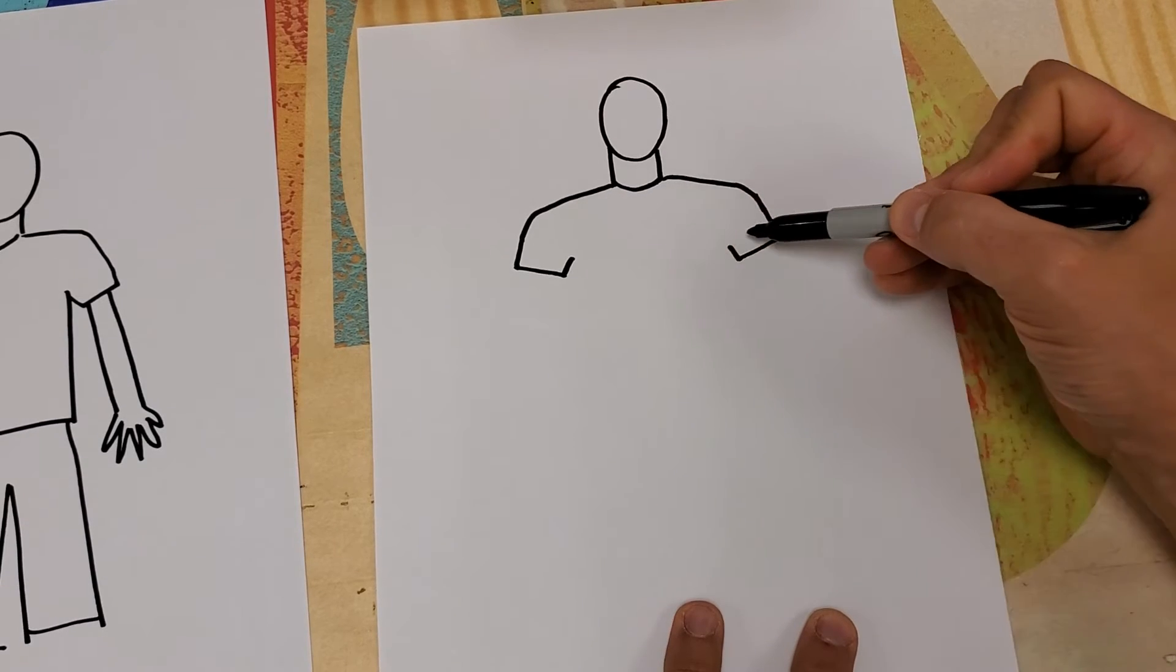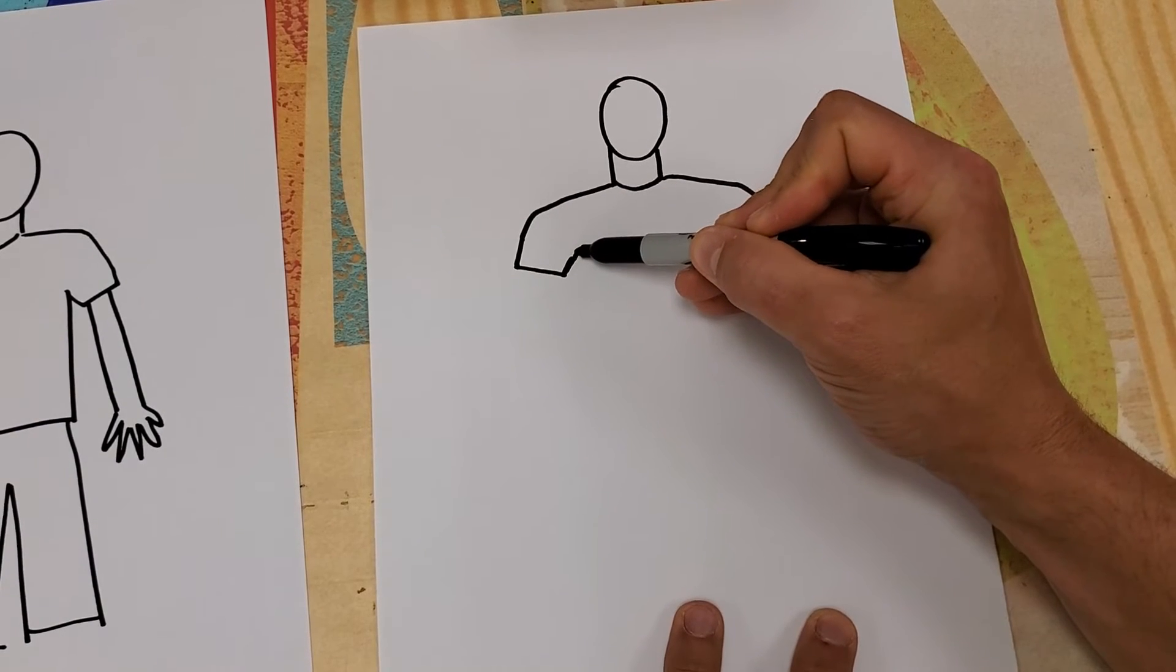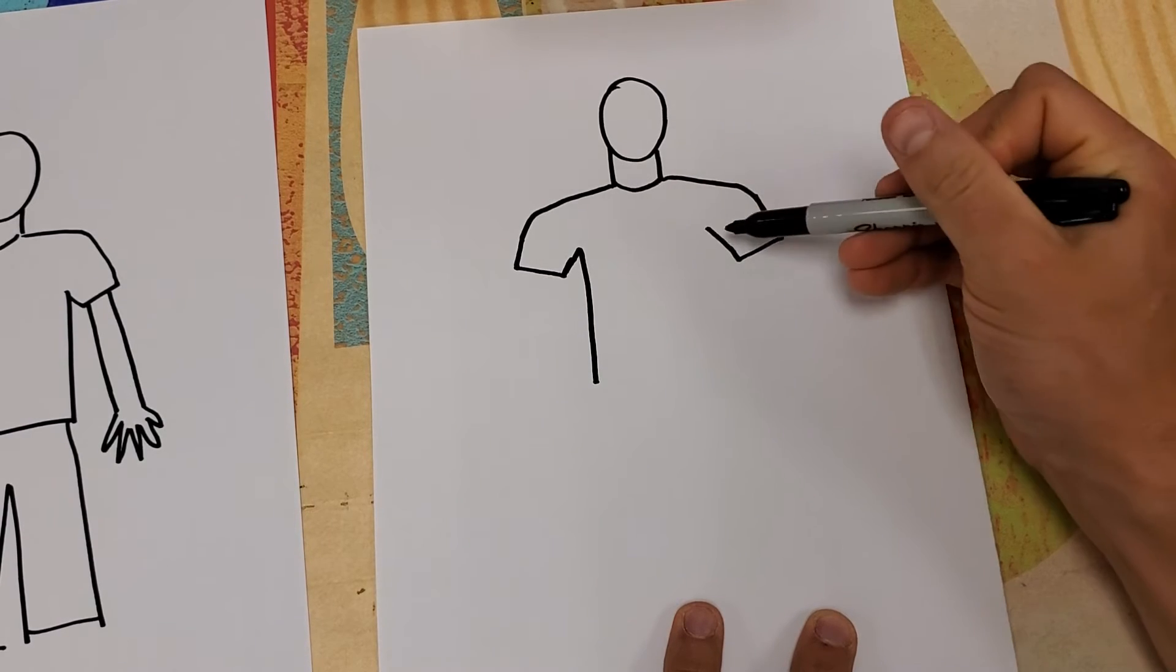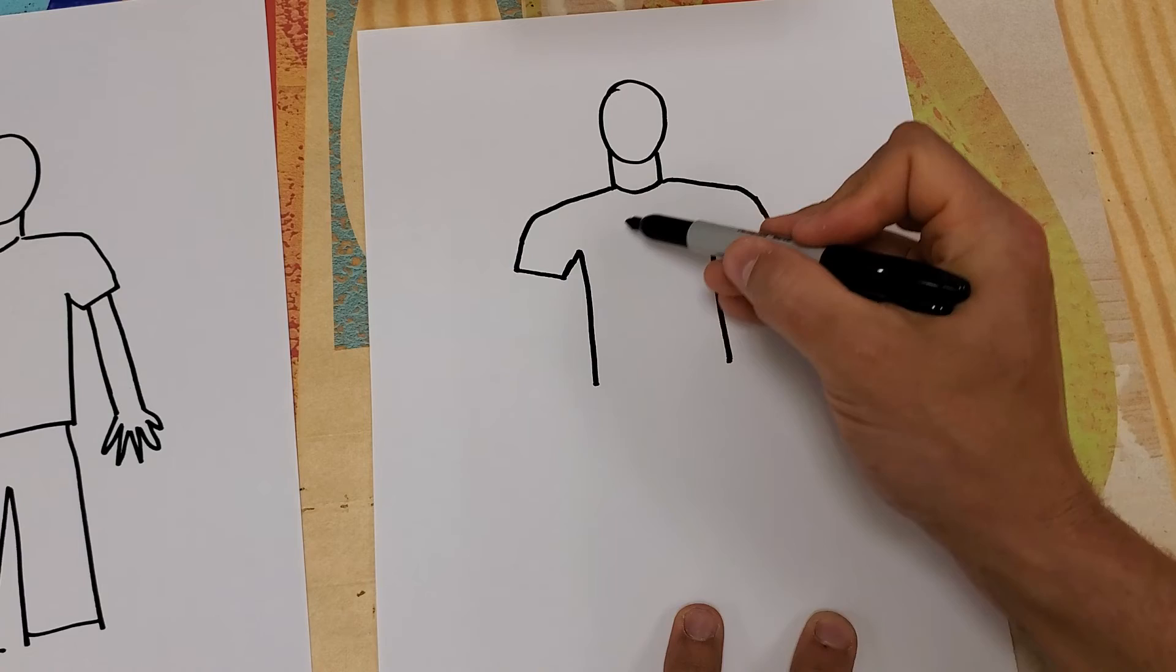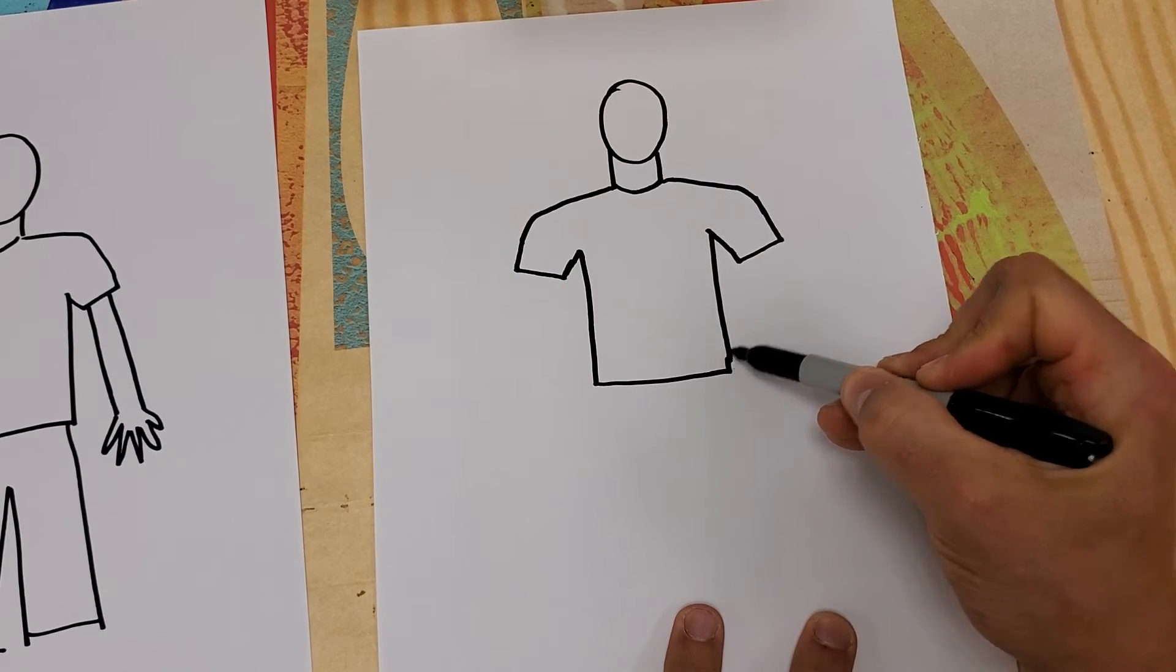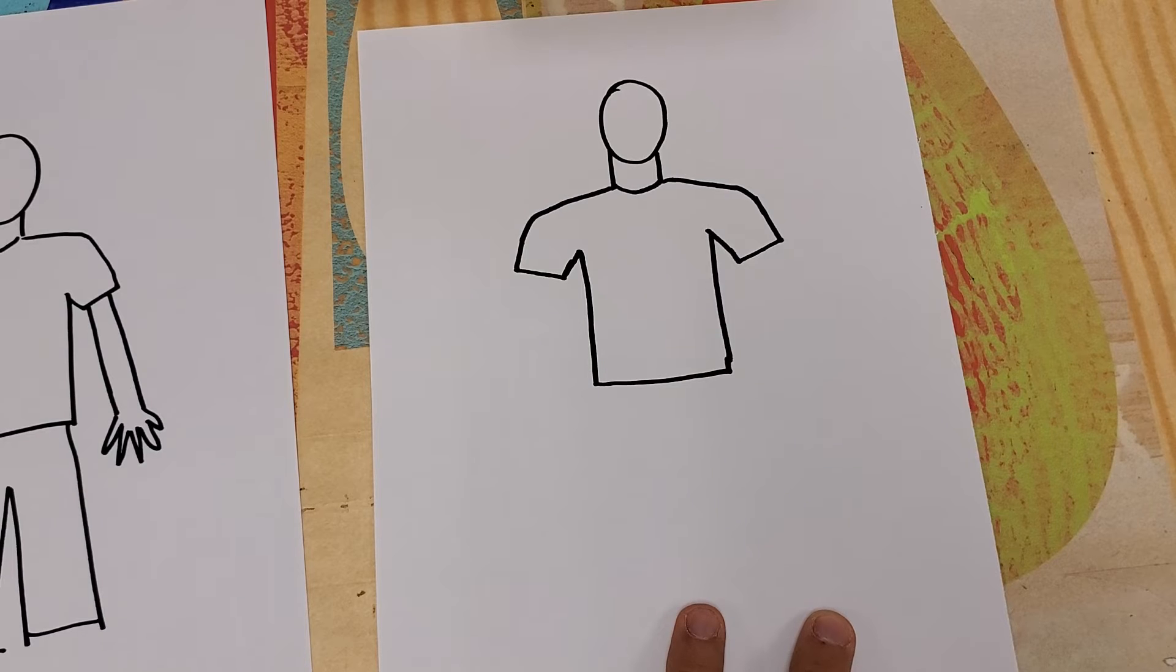These are the spots where the armpits are. And that's where the side of the body comes down. So I'm going to take those up a little into the armpit. Down this portion of us is called our torso. It's where our belly and our chest is. I'm going to make that more of a boxy shape there.